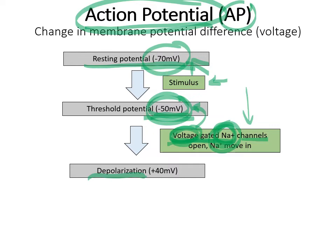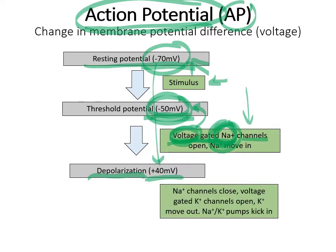Depolarization actually goes quite a bit on the positive side. These positive sodium ions rush in to the point where the actual potential difference between the inside and outside goes from negative 70 all the way up to positive 40. At this point, these sodium channels are going to close, and voltage-gated potassium channels are going to open. During depolarization the inside of the cell has become positive.